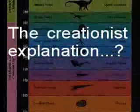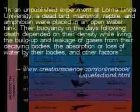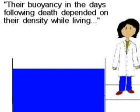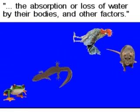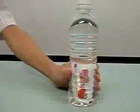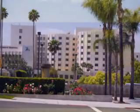According to creationscience.com, what puts animals at different levels is their buoyancy after death. In an unpublished experiment at Loma Linda University, a dead bird, mammal, reptile and amphibian were placed in an open water tank. Their buoyancy in the days following death depended on their density while living, the build-up and leakage of gases from their decaying bodies, the absorption or loss of water by their bodies and other factors. But as every school kid knows, to maintain neutral buoyancy in a liquid of uniform density, work has to be done — that's the principle of a toy called the Cartesian diver. Dead animals either float or they sink. Loma Linda is a Seventh-day Adventist university, and it's a shame that Dr Karen Jensen, who makes the claim, has decided not to publish her results, so we'll never know how this miracle happened.